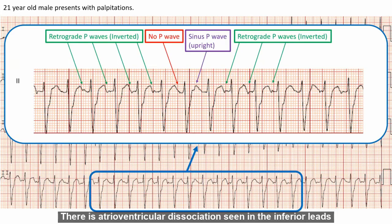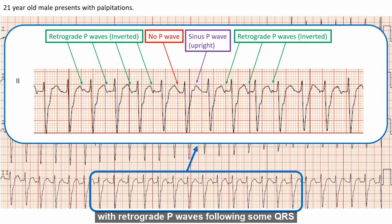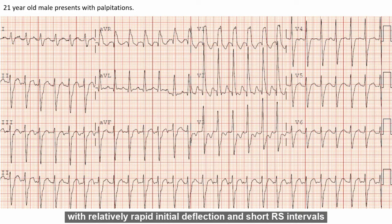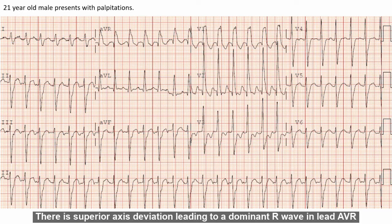There is atrial ventricular dissociation seen in the inferior leads with retrograde P waves following some QRS. The QRS is relatively broad at about 120 milliseconds with relatively rapid initial deflection and short RS intervals. There is superior axis deviation leading to a dominant R wave in lead AVR.